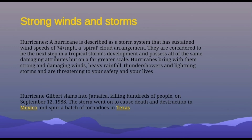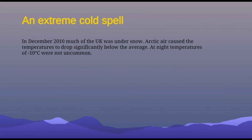Now we have the extreme cold spell. I used an example from outside the Caribbean, since the Caribbean is warm and not prone to cold spells. In December 2010, much of the United Kingdom was under snow. Arctic air caused temperatures to drop significantly below average. At night, temperatures reached negative 10 degrees Celsius — well below zero, very cold — and it was not what the United Kingdom was used to. That's why it was an extreme cold spell.